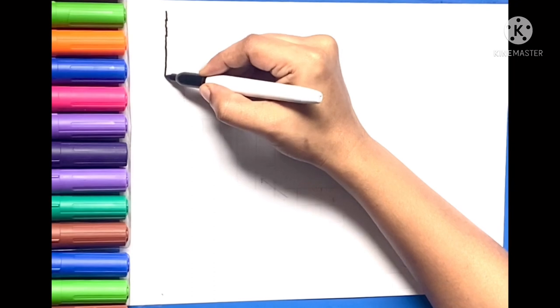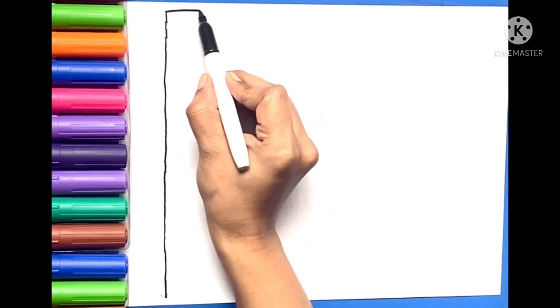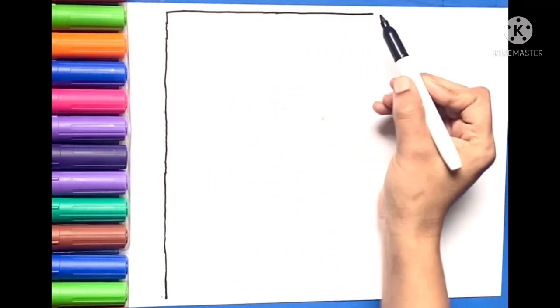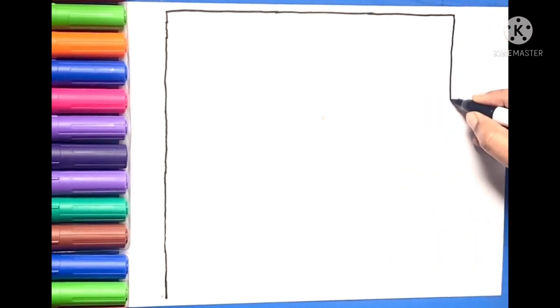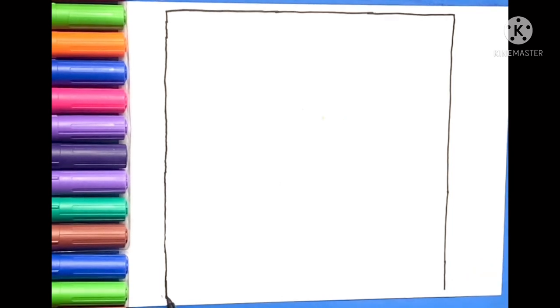First step is to draw a straight standing line. Second step is to draw a sleeping line. Then again standing line, and then again sleeping line. Now we got a square shape.